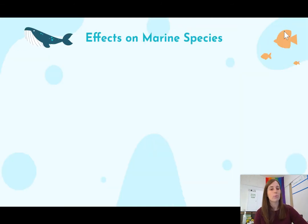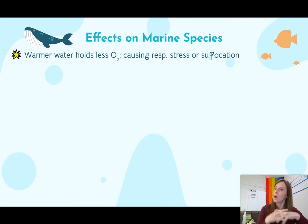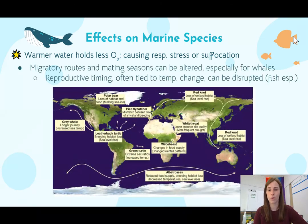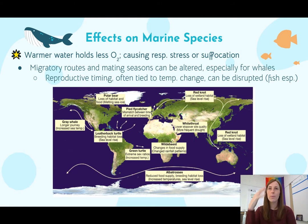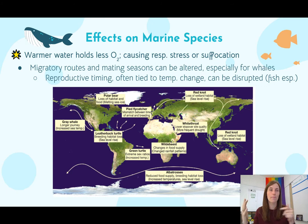How does this affect marine species living in the ocean? One problem is that, as we talked about in unit eight, warmer water holds less oxygen. Marine organisms need oxygen for cellular respiration, so less oxygen causes respiratory stress or even suffocation. Additionally, migratory routes and mating seasons can be altered — especially for whales, whose reproductive timing is tied to temperature changes. Fish are also really susceptible to this disruption of natural reproductive cycles.